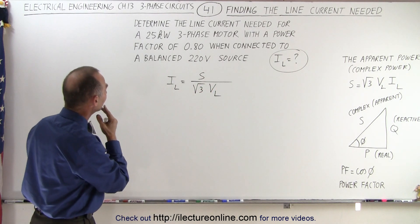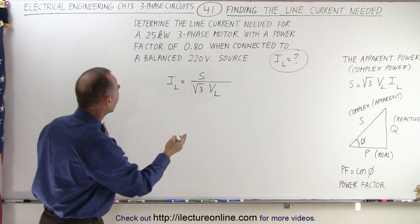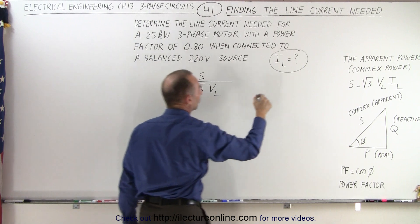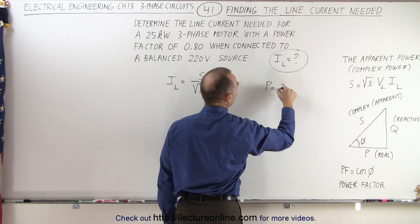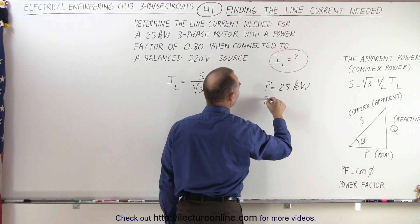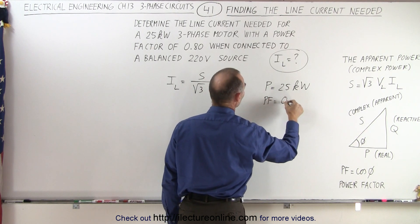Let's see what we've been given. We haven't been given the complex power, but we're given the real power P, which is 25 kilowatts, and the power factor, which is 0.8.